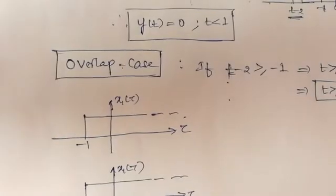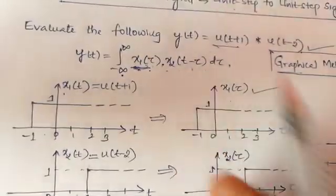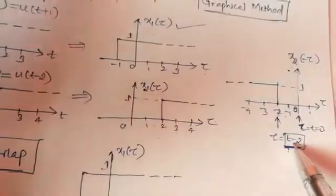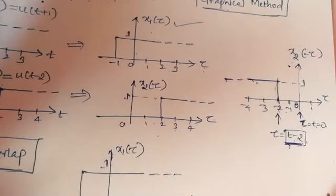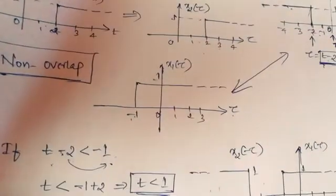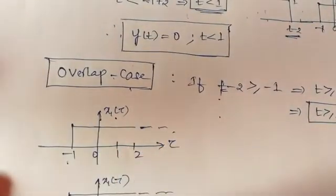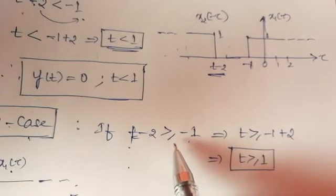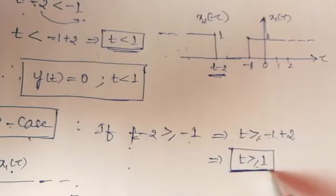Next we check the overlap case. We keep the first signal constant and shift the second signal so there is overlap. The starting point of the second signal is t−2. If t−2 ≥ −1, overlap is possible. Taking −2 to the other side: t ≥ −1 + 2, so t ≥ 1. If t is greater than or equal to 1, overlap of the two signals occurs.